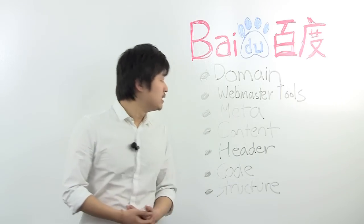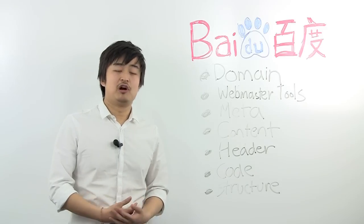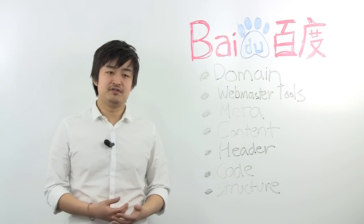The first thing I'll be talking about is the domain name. Make sure you're using the Chinese TLD. Baidu will rank these primarily. These are .cn and .com.cn.